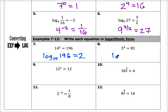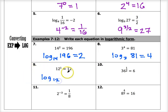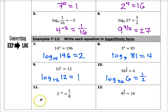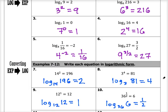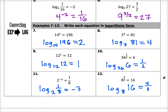Number eight: log base 3 of 81 equals 4. Number nine: log base 12 of 12 equals 1. Number ten: log base 36 of 6 equals one-half. Number eleven: log base 2 of one-eighth equals negative 3. And then number twelve: log base 8 of 16 equals four-thirds. All we did on this first page is rewrite the equations from one form to the other, but you need to be comfortable doing that because it's going to allow you to actually evaluate logarithms.